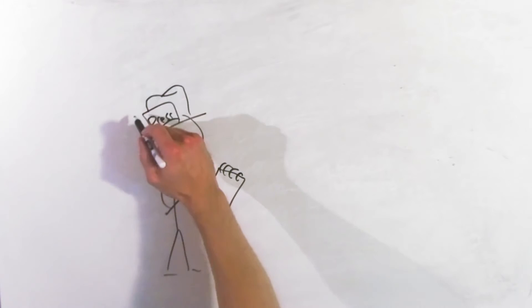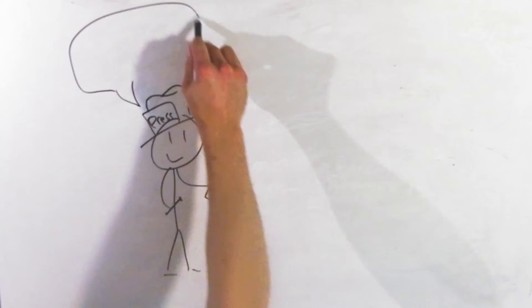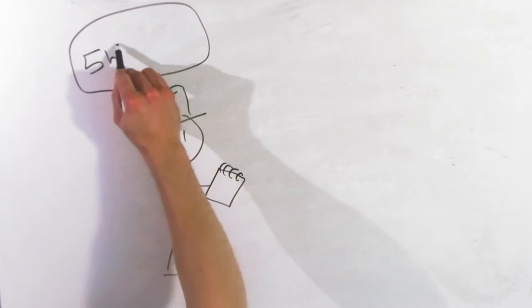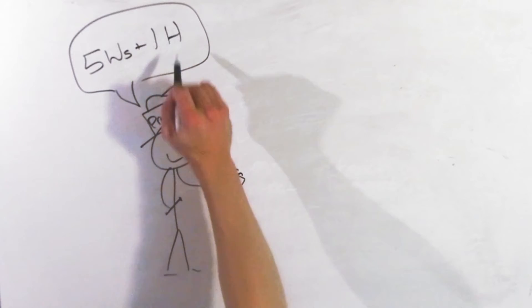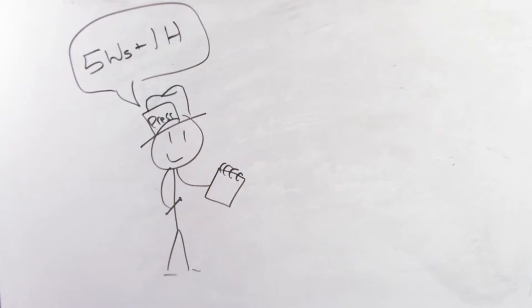If you were to ask him, and you should, he would tell you all about the five W's and one H, and how they help you organize the content for your story. Every good story contains the five W's and one H, Joey reminds us.